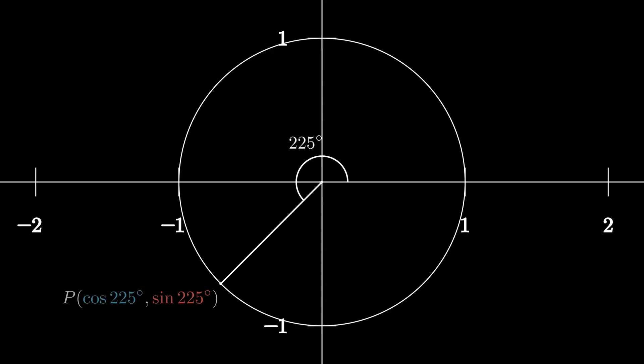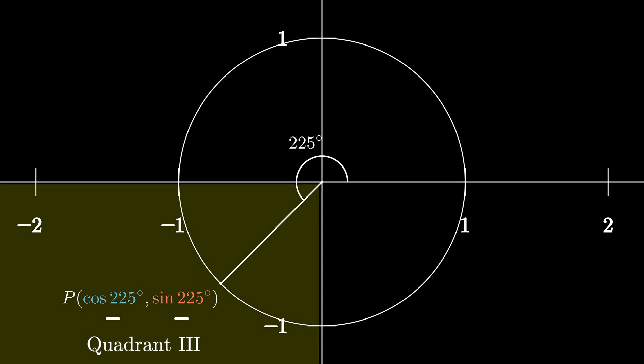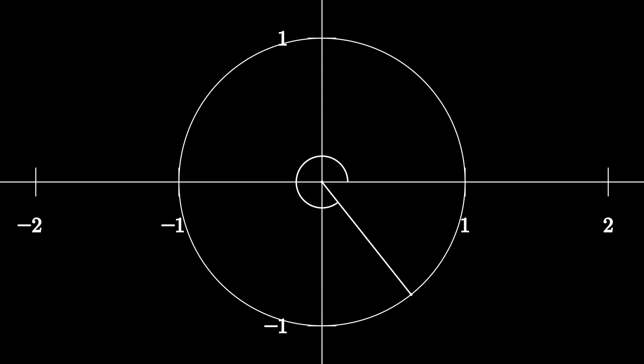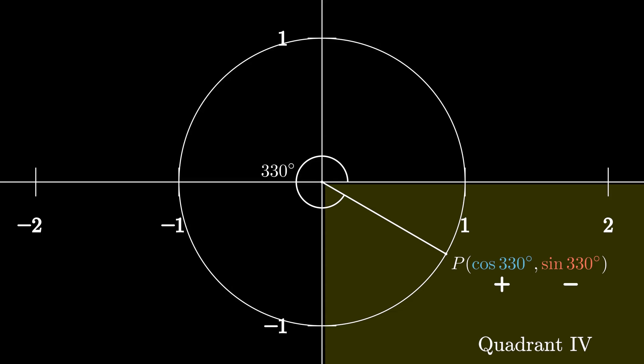The coordinate will be cosine 225 degrees comma sine 225 degrees. Both x and y values are negative. Finally at 330 degrees, sine is going to be negative as y values are all negative in the fourth quadrant.